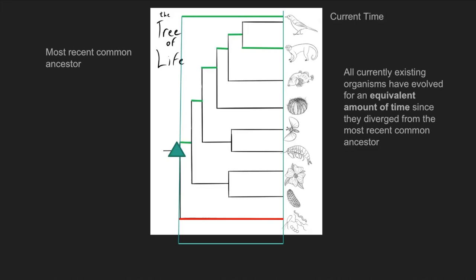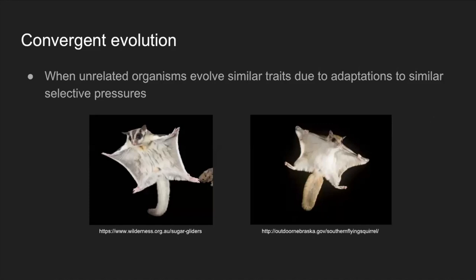I'm going to go over a couple of examples, but first let me define convergent evolution. This is a phenomenon where unrelated organisms evolve similar traits due to adaptations to similar selective pressures. As an example, here we have sugar gliders and flying squirrels. Both look really similar, but sugar gliders are marsupials from Australia — in the group with kangaroos and koalas — whereas flying squirrels are North American rodents. Even though these mammals are separated by millions of years of evolution, they look really similar because they both live in trees and gliding from branch to branch is advantageous for both.